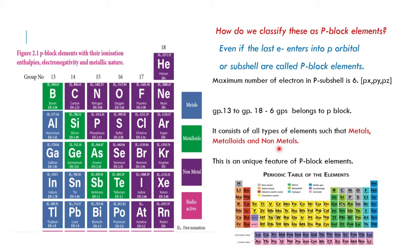P block elements consist of all types of elements: metals, metalloids, and non-metals. In the periodic table color coding, dark green represents metals, fluorescent green represents metalloids, and blue shades represent non-metals.